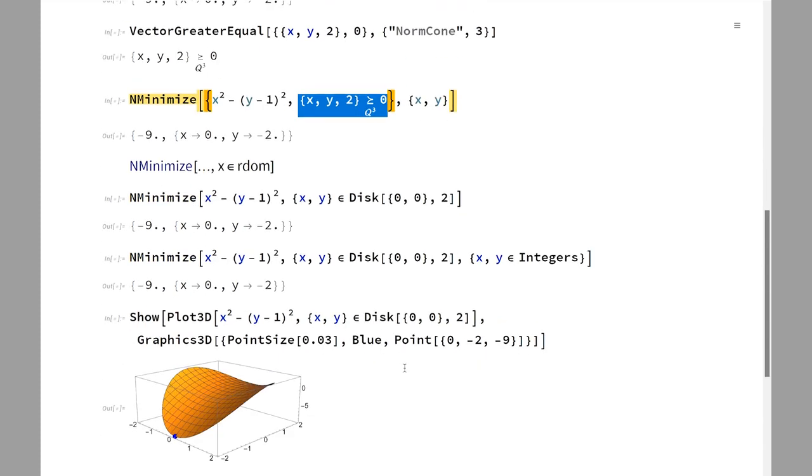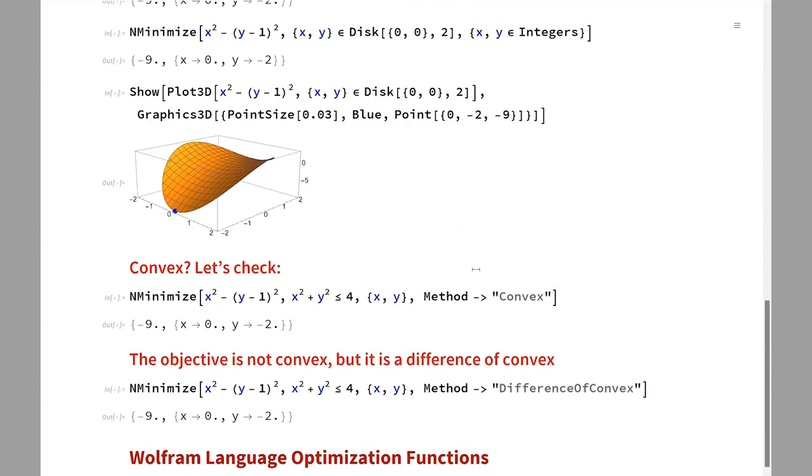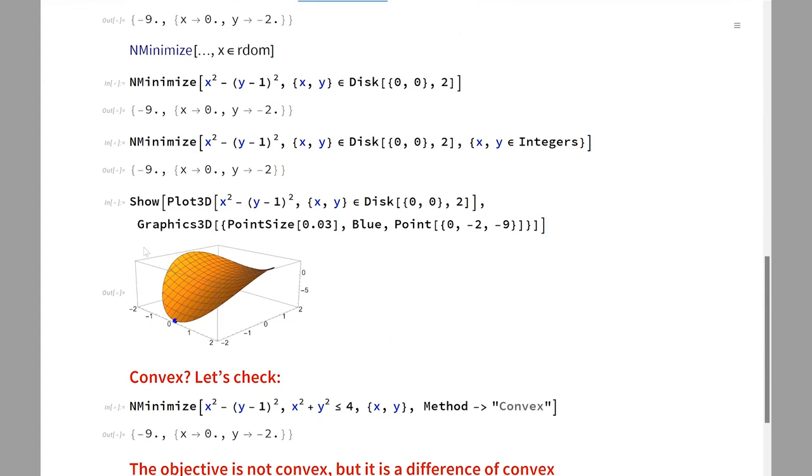We can represent the constraints with regions and talk about the domains—whether the variables are real or integer or vectors or matrices. This flexibility is coming in together with the new algorithms in NMinimize, so you'll be able to access all of this through just one single function, NMinimize, for global optimization.